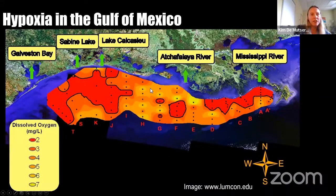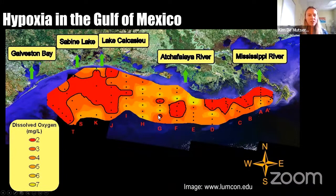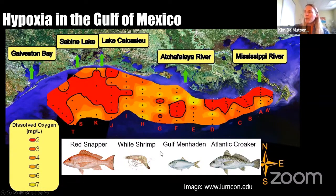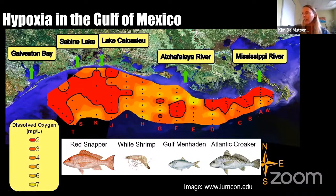It's been long known that this zone forms, but what's not as well known is the effect on fish and fisheries in the northern Gulf. There are species here that are commercially and recreationally important, like red snapper, white shrimp, Gulf menhaden, and Atlantic croaker. Atlantic croaker is also very abundant in that area. I'll be focusing mainly on those nekton species and the effects of the hypoxic zone on these species.